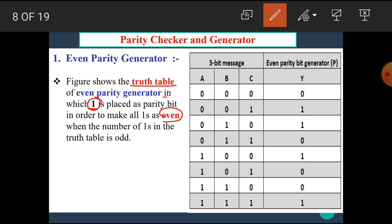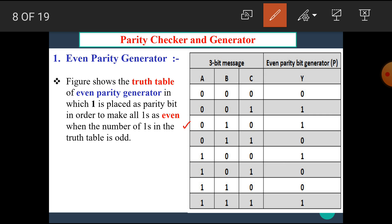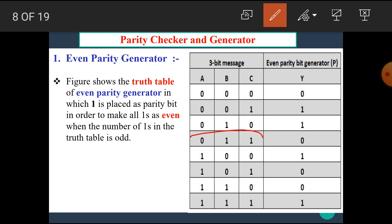1 is placed when the number of 1s in the truth table is odd. Consider the first combination 0,0,0: the total number of 1s is 0, hence there is no need to place 1, the parity bit is 0. In the next combination 0,0,1: the total number of 1s is 1, which is odd — to make it even, we place another 1 here. Similarly, for combination 0,1,0: it also has only one 1, which is odd — to make it even, we add 1. For combination 0,1,1: there are two 1s, which is even, hence there is no need to place the parity bit, so parity bit is 0. For 1,0,0: only one 1, to make it even we place one parity bit.